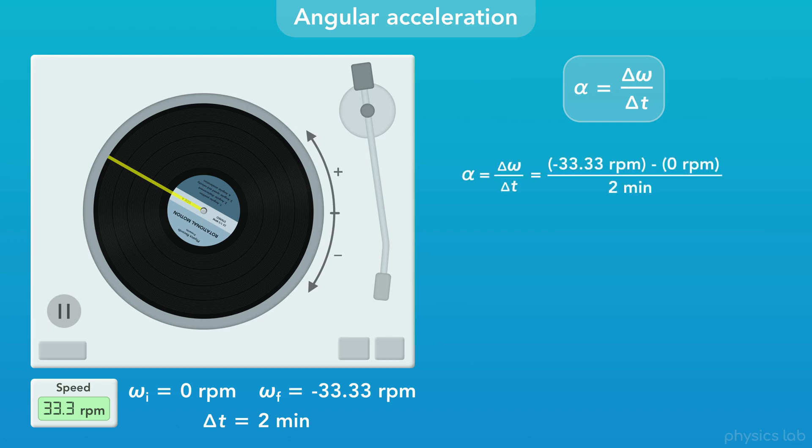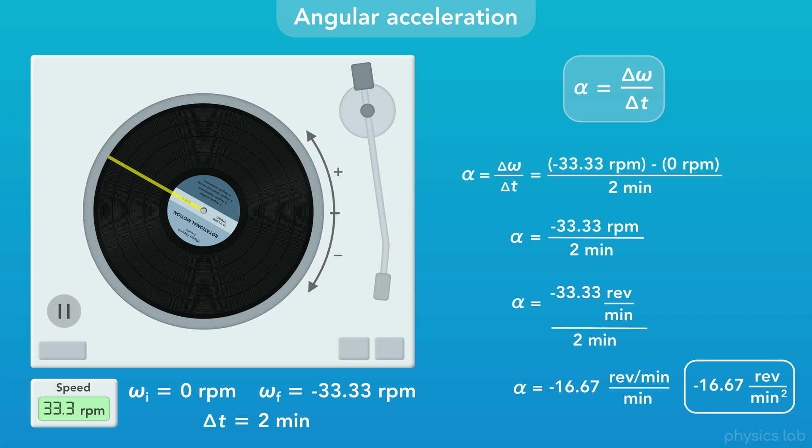The change in angular velocity would be negative 33 and a third RPM minus 0 RPM, final minus initial. We divide that by the period of time, 2 minutes. Remember that the unit of RPM means revolutions per minute. So we're taking negative 33 and a third revolutions per minute and dividing that by 2 minutes. That gives us negative 16 and 2 thirds revolutions per minute per minute, or revolutions per minute squared.